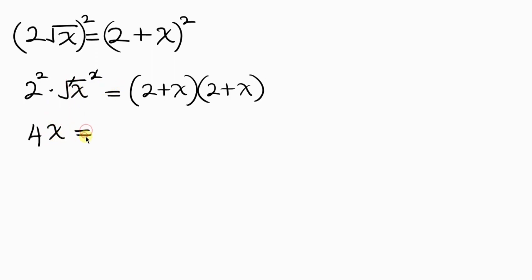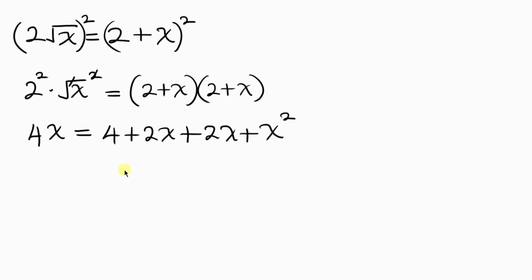Let's expand the right hand side: 2 times 2 is 4, plus 2 times x is 2x, and then plus x times 2 is 2x, plus lastly x times x is x squared. Simplifying further we have 4x equal to 4 plus 4x plus x squared.